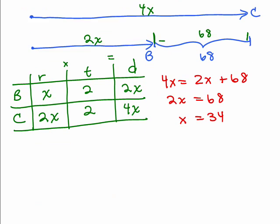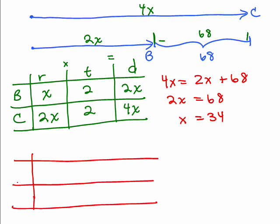All right. So, let's check and see if this makes sense. If the bus, the car, rate, time, distance is the check. All right. Now that we know what x is, the bus was going 34. So, the car was going 68 miles per hour. They each were going 2 hours.